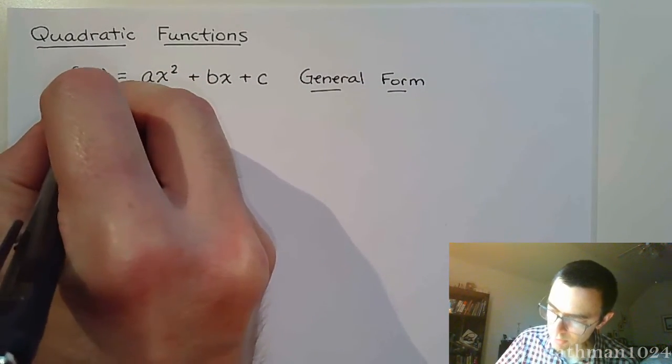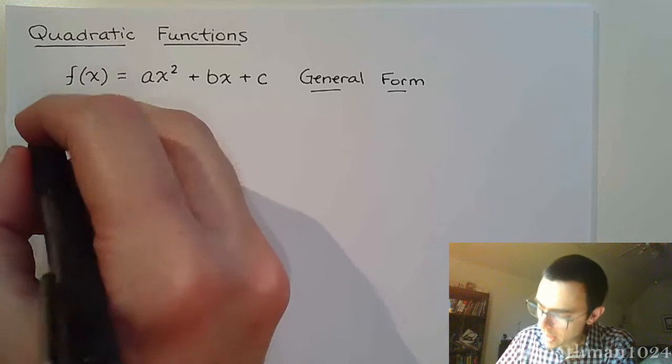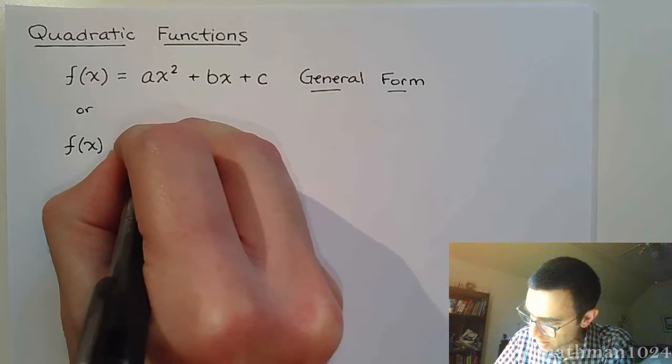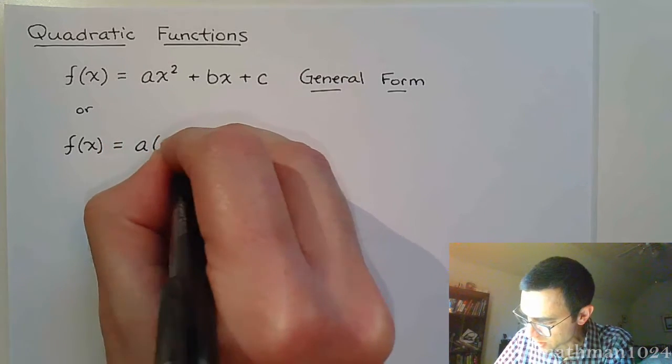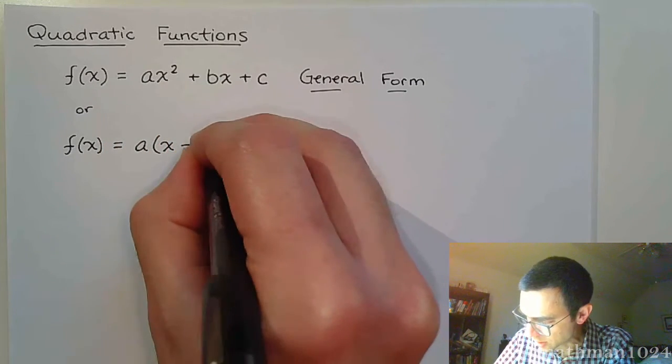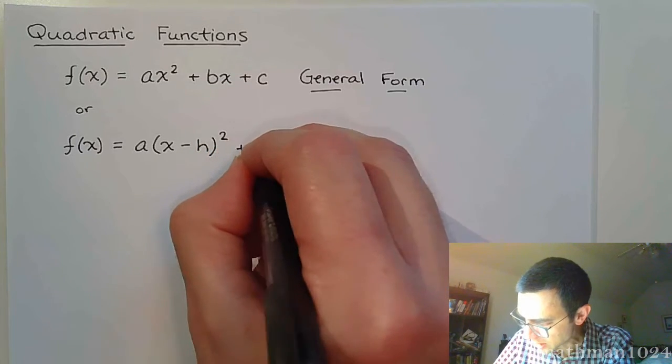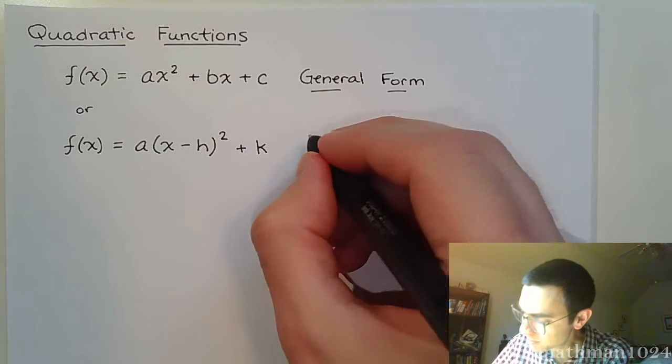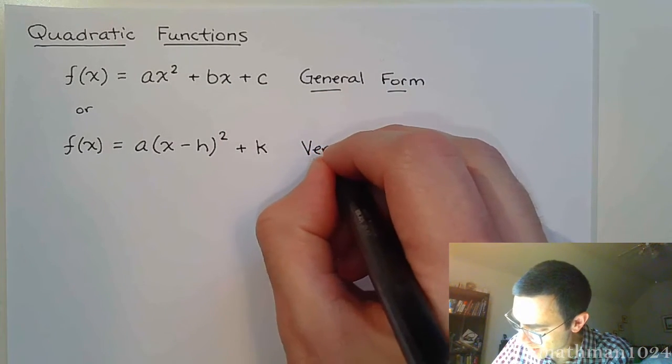There is another way of writing this, so we've got the general form and here's a form that might look a little bit more familiar to you based on the graphing that we did for nonlinear functions a few sections ago, and that's a times the quantity (x - h)² plus k, and this is what we call the vertex form.